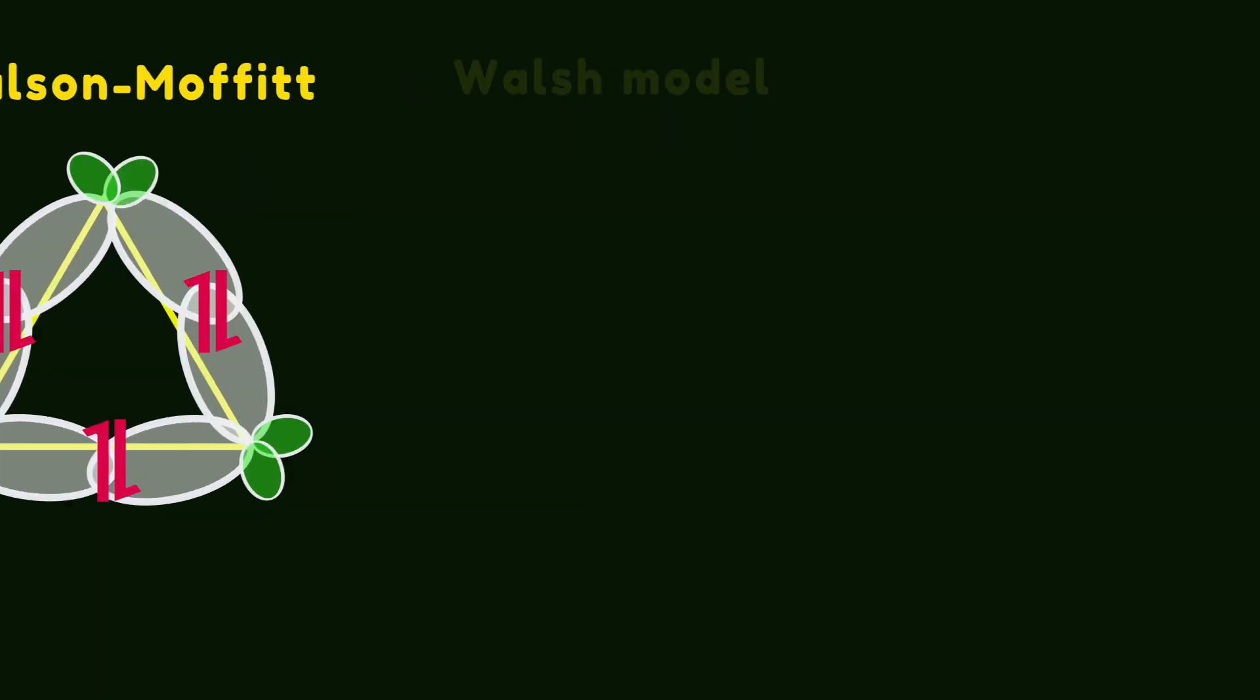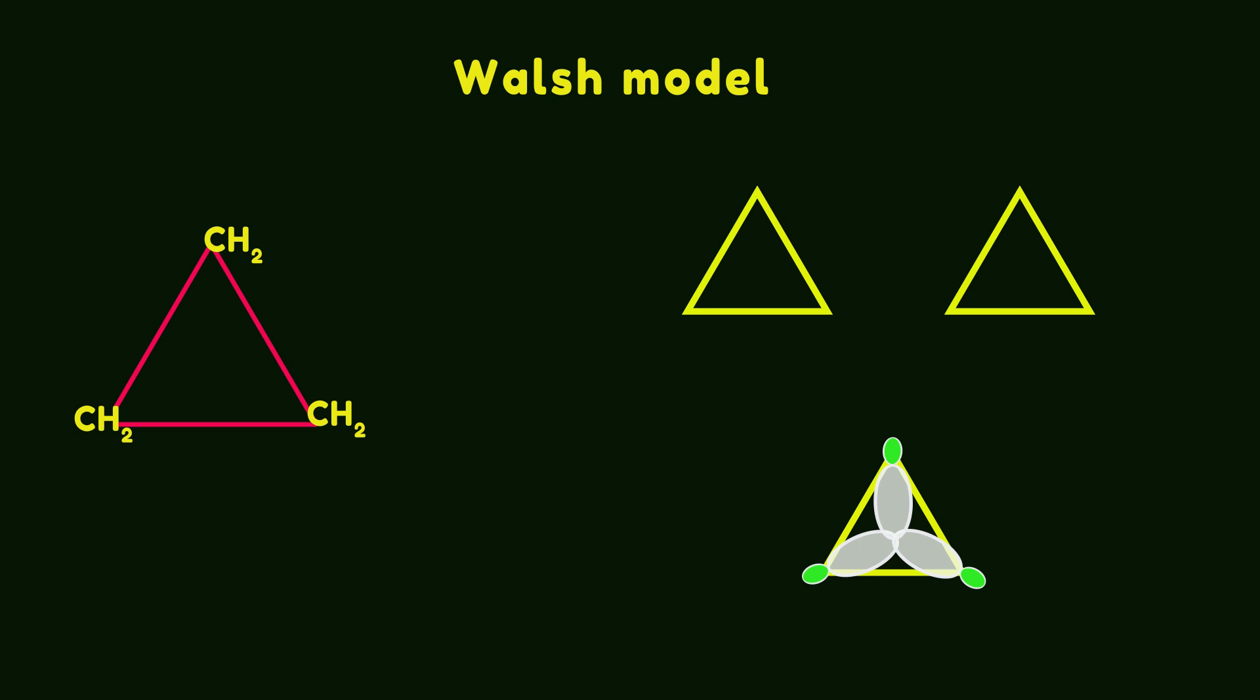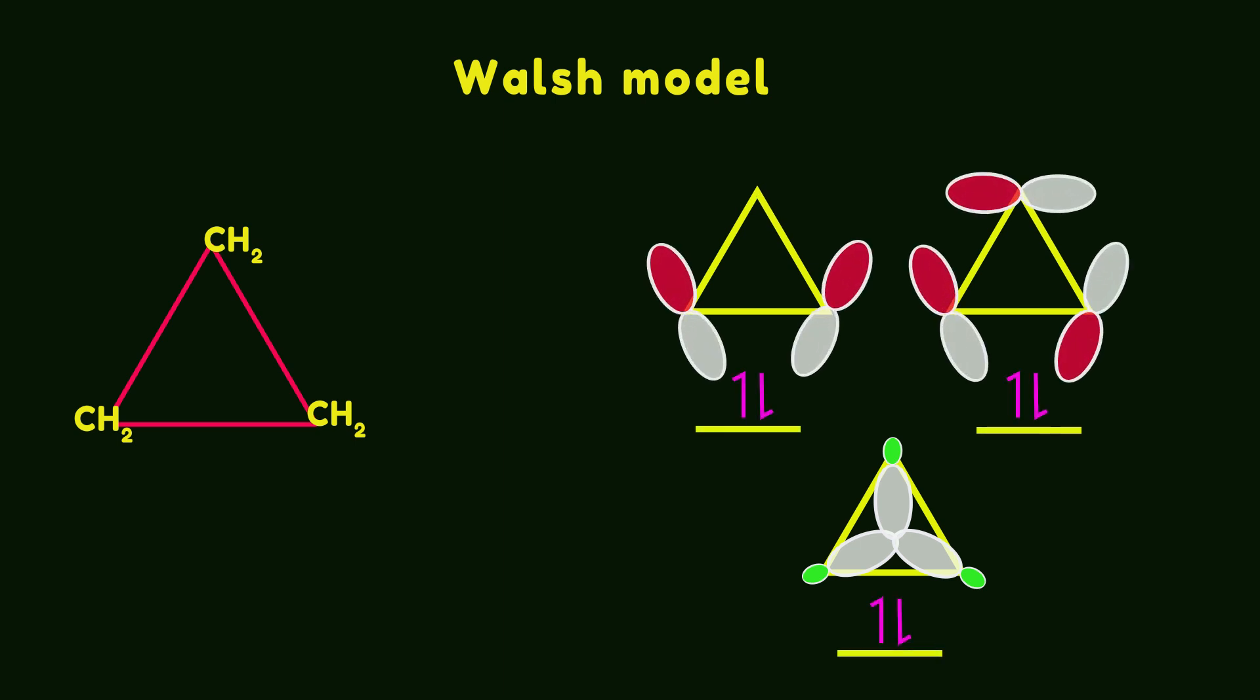We know that cyclopropane consists of three CH2 groups. The Walsh model suggests that three sp2 orbitals of CH2 groups form the first bonding orbital. These orbitals are directed toward the center of the ring. The remaining p orbitals of CH2 form two degenerate orbitals that have pi character. We use these molecular orbitals to explain the conjugation effect.